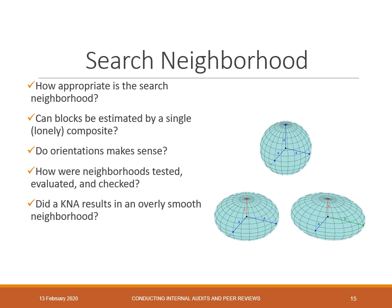The search neighborhood is the next important step. Using an appropriate subset of data to inform your block is really critical to your estimation — these are the data that will give you the estimate of that grade or variable within the block. You want to be sure that your parameters actually make sense: whether using hard or soft boundaries in the domain, how many samples you use — the min and the max — do you have enough, do you have too many? Understanding the consequences of using too many versus too little samples, as well as large searches versus isotropic versus omni-directional searches. The orientations can absolutely be key and definitely need to be reviewed.